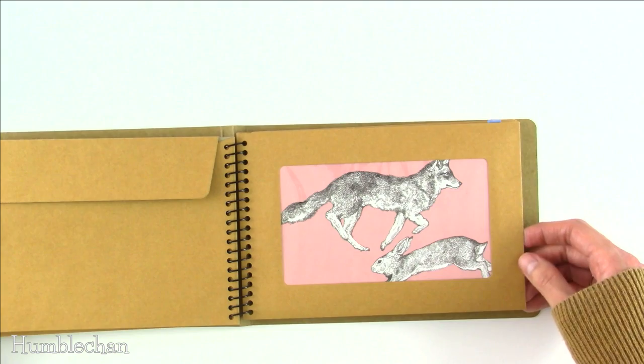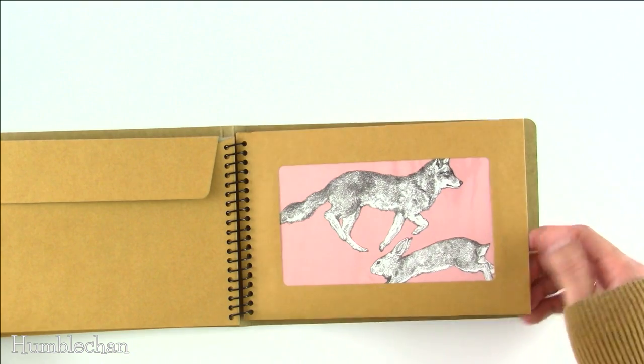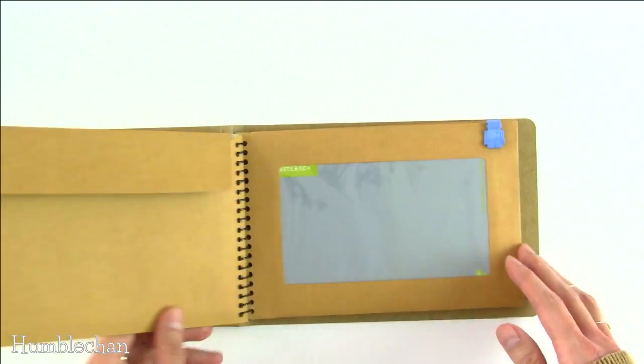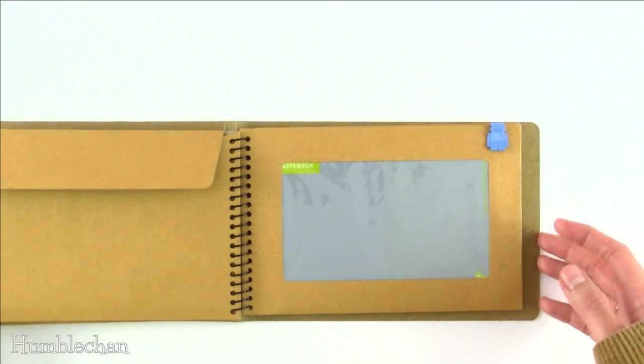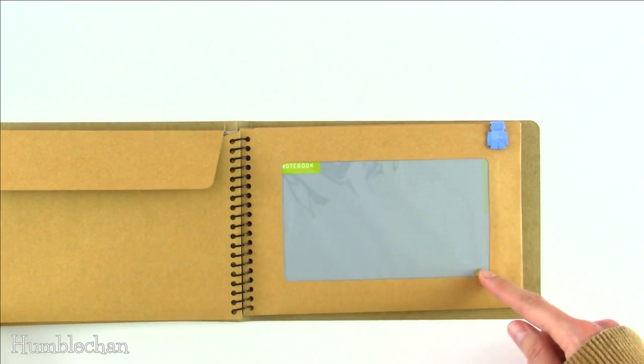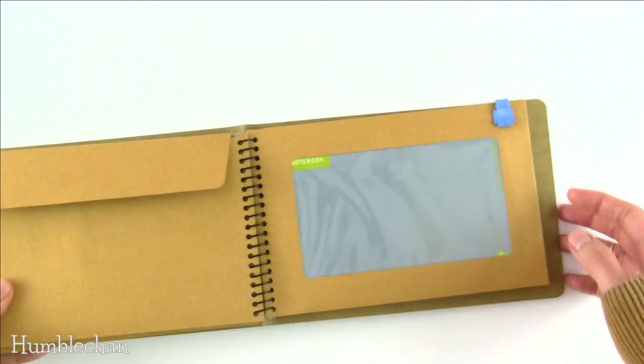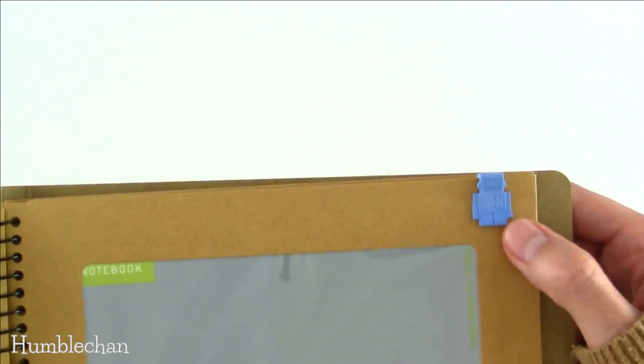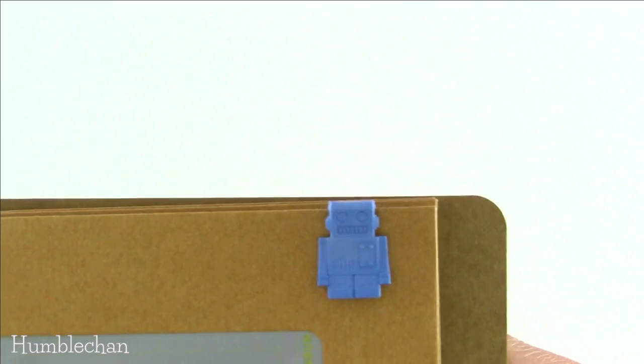Here we have more Higuchi Yuko postcards. I think this envelope has four postcards in there. And then here, this is one of the A6 memo pads from Hobonichi. And then I put a little robot clip on there. This is a Midori clip as well, like the cat one.